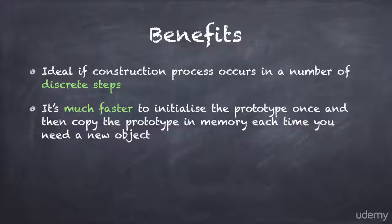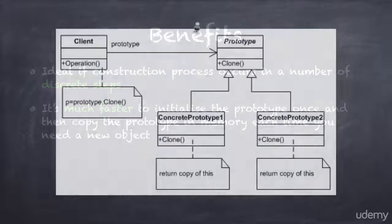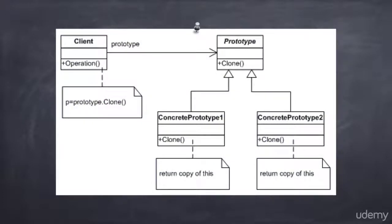Here is the UML diagram of the Prototype pattern. The pattern is really simple with only a few classes. The prototype class is an abstract base class that provides a clone method. There are two subclasses named ConcretePrototype1 and ConcretePrototype2 that both implement the clone method. When the client needs a new object, it declares a variable of type prototype and instantiates it with either ConcretePrototype1 or ConcretePrototype2, then calls the clone method to acquire a copy of the concrete prototype.